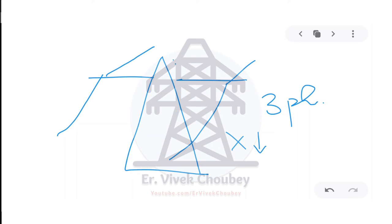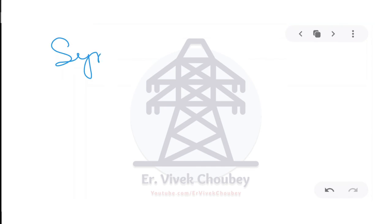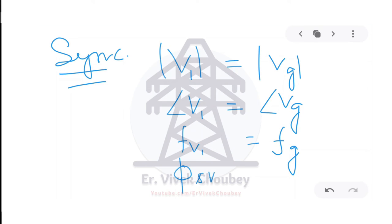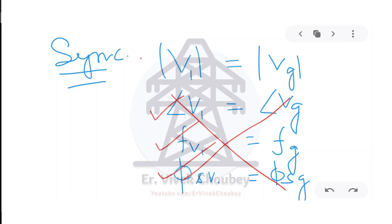Another advantage: simplified synchronization. In AC, to connect a generator to the grid you need: voltage magnitude V1 = VG, angle of V1 = angle of VG, frequency of V1 = frequency of grid, and same phase sequence — many requirements. With HVDC, none of these matter. There is no angle, no frequency, no phase to match. All you need is the same voltage magnitude. This makes the system comparatively easy and less complex.